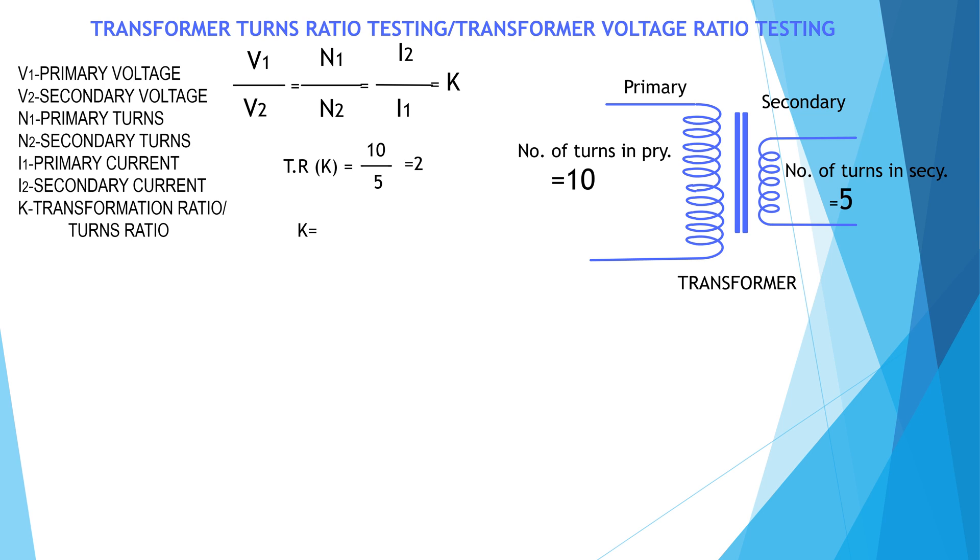So voltage ratio is equal to 2. The voltage ratio is equal to phase voltage V1 by phase voltage V2 which is equal to 2. We have to test the voltage ratio or turns ratio at each tap as each tap has different turns ratio.